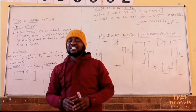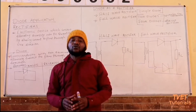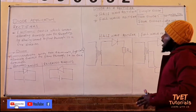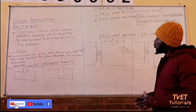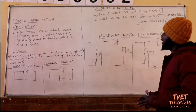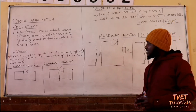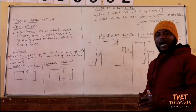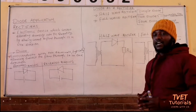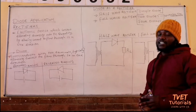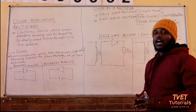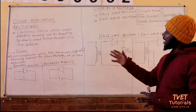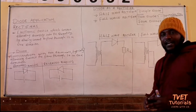Before we get to that, let's remind ourselves about the definition of a diode. A diode is a semiconductor with two terminals. I believe you still remember the two terminals — we have the cathode and the anode. The cathode is the negative terminal and the anode is the positive terminal. So a diode is a semiconductor with two terminals, typically allowing current to flow through it in one direction.